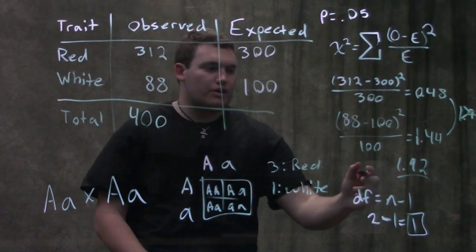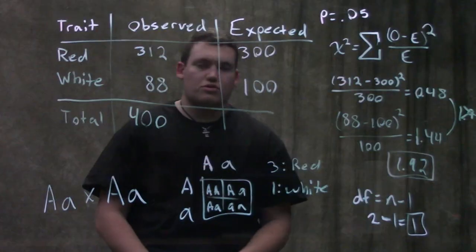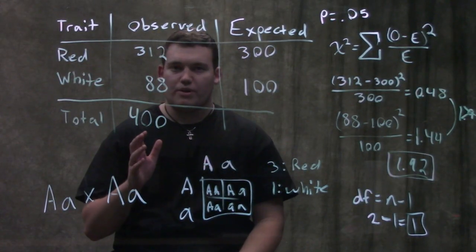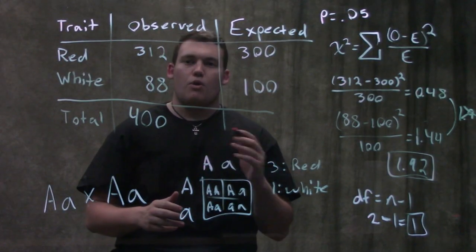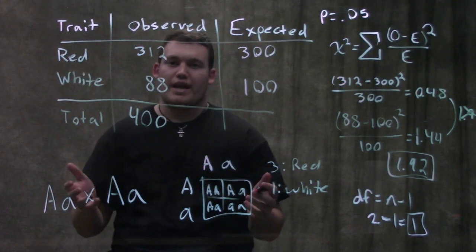And so what we're looking for on that table is 1.92. So you're probably not gonna see 1.92 on there, don't freak out, that's okay. You might see something that's like 1.5 and like 2.8.